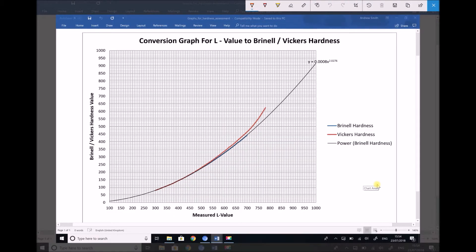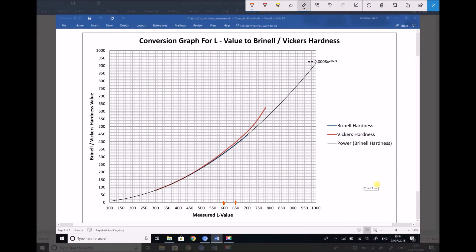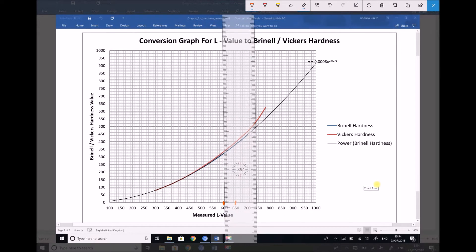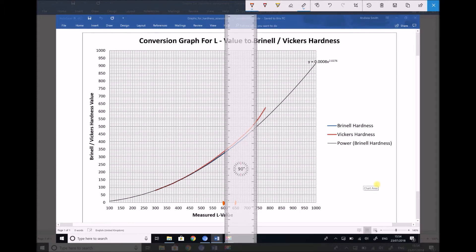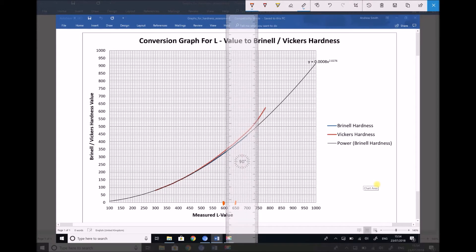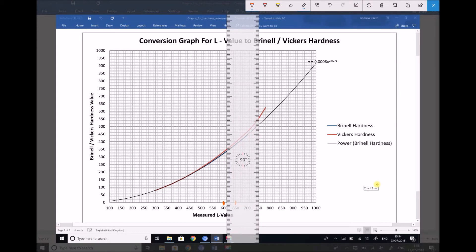So we had an average L value of 610. And if we refer to our x-axis here at the centre of the number 600 we have an index mark for an L value of 600, and at the centre of 650 we have an index mark for 650. So what we're going to do is take our ruler and we're going to project upwards from the L value of 610, and we're going to project upwards until we meet that Brinell line.